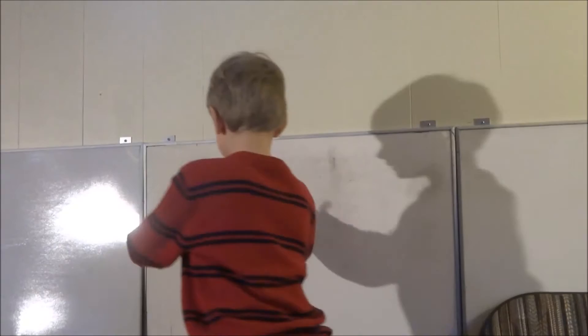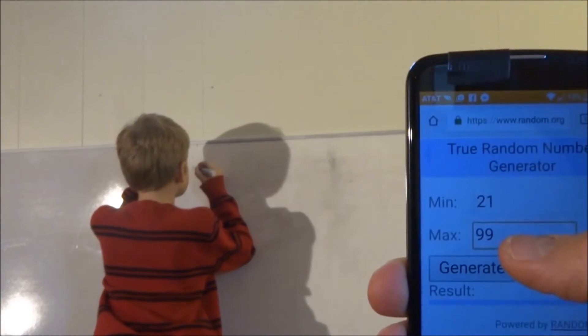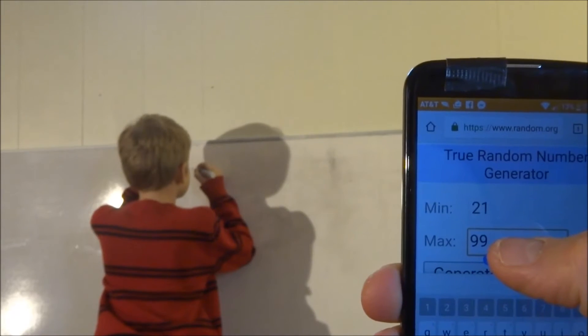So in this video, Toby will be doing two-digit times two-digit multiplication in his head. We will be picking three math problems randomly for him to do, and he will have one minute for each one. Are you ready to start, Toby? Yes. Okay, great. So we will be using random.org to generate two random numbers between 21 and 99 that he'll have to multiply.